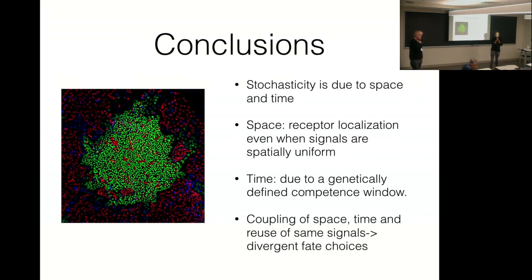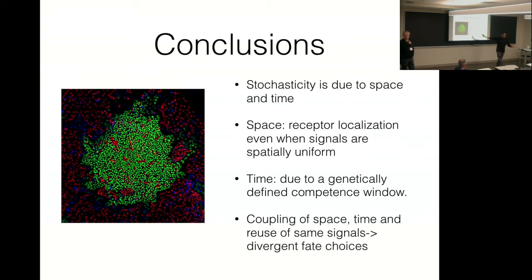When you do the FACS, you take cells off the dish, run them through the machine, and put them back on a separate plate with new media and differentiation conditions. We always add the signal — a lot of it — to make them turn yellow in our experiment.